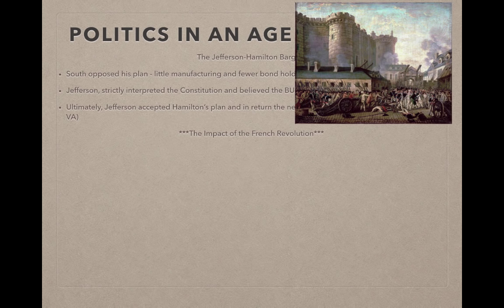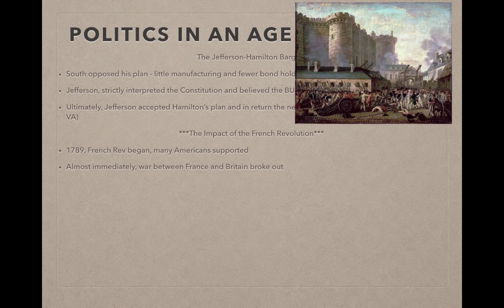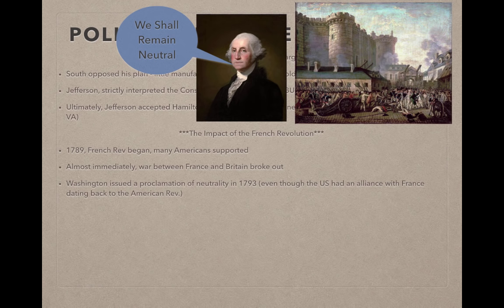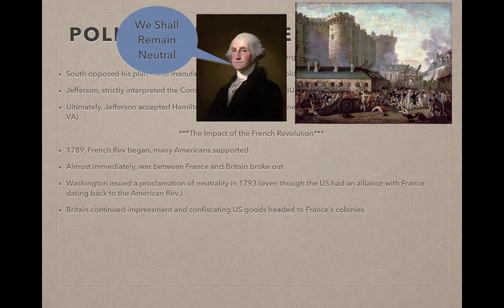In 1789 in France — July 14th specifically — we have the Storming of the Bastille. Many Americans initially supported it, thinking the French were adopting their revolutionary ideas and overthrowing their monarch. Jefferson in particular was ecstatic. Almost immediately, war between France and Britain broke out, and Washington issued a Proclamation of Neutrality — even though the U.S. still had an alliance with France dating back to the American Revolution.